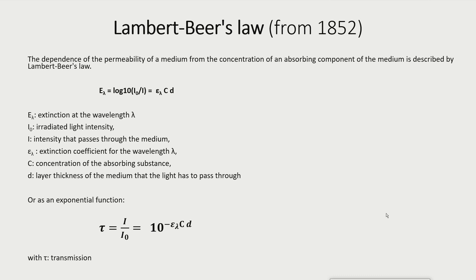The extinction at wavelength lambda equals the decadal logarithm of irradiated light intensity I0 over the light intensity that passes through the medium, I — which equals the extinction coefficient epsilon at wavelength lambda, times the concentration of the absorbing substance C, times the path length through the medium D. As an exponential function, the transmittance tau equals I over I0, which equals 10 to the power of minus epsilon-lambda times C times D.